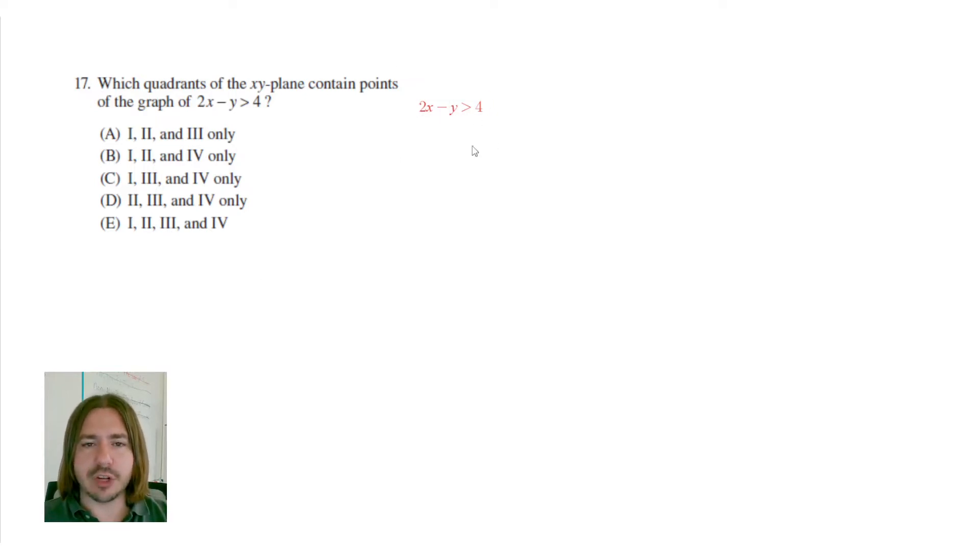So in order to graph this, I'm going to try to put this into slope-intercept form, or y equals mx plus b form, so that I can easily identify the slope and the y-intercept. So to do that, I'm going to subtract 2x from both sides. And that's going to give me negative y is greater than negative 2x plus 4. So you can see it's almost there in that slope-intercept form.